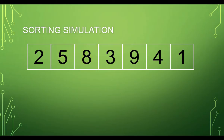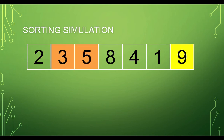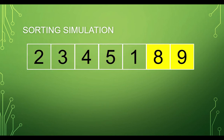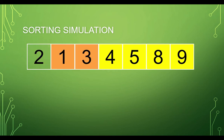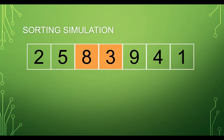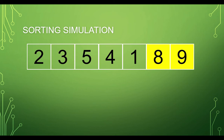Bubble sort, also referred to as sinking sort, is a simple sorting algorithm that repeatedly steps through the list, compares adjacent elements, and swaps them if they are in the wrong order. To see how elements in a list are reordered, let's see an example of how bubble sort works.